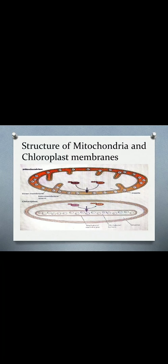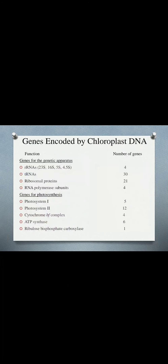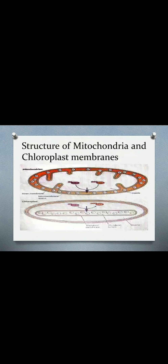The genome of the chloroplast is circular in nature, and multiple copies are present. This genome is more complex than the genome of the mitochondria. Chloroplasts have approximately 150 genes with a size of 120 to 160 kilobase pairs. This chloroplast genome encodes RNA, proteins, and a variety of proteins involved in photosynthetic reactions.